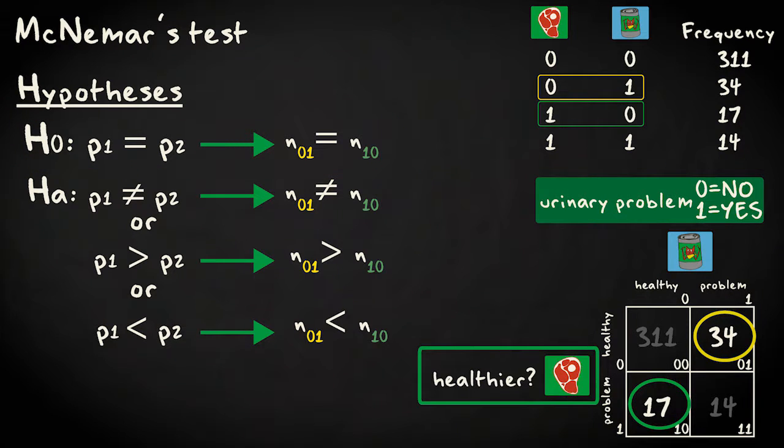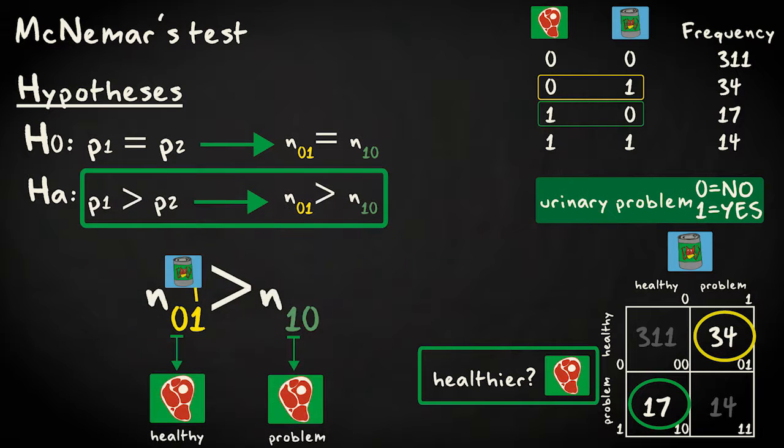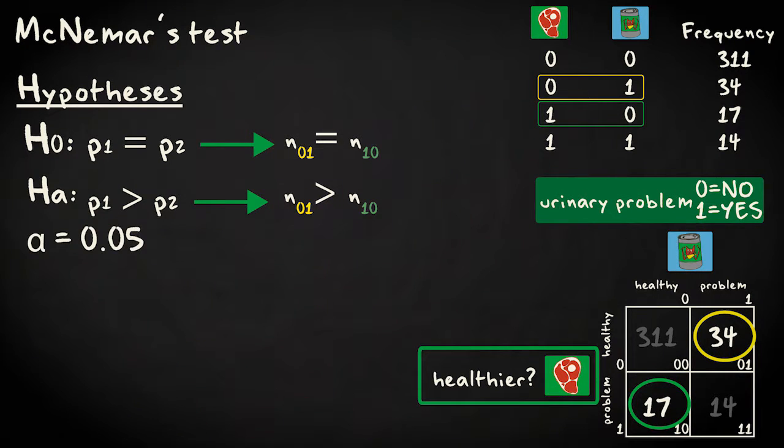Suppose we believe raw-fed cats will be healthier, and have less urinary problems. This is our alternative hypothesis. If we put the raw diet group in the rows, we would expect the top right cell to be larger than the left bottom cell, so we would expect the difference to be positive. We'll set the significance level to 0.05.